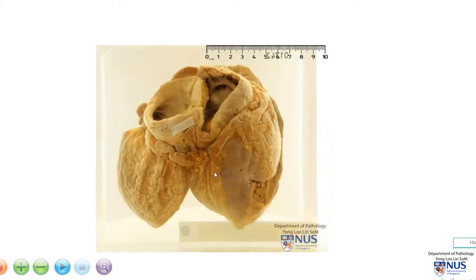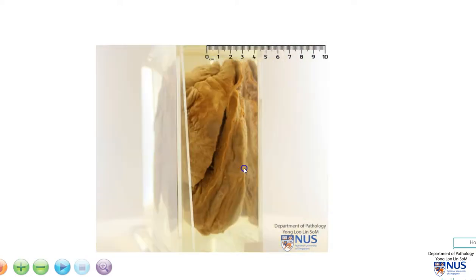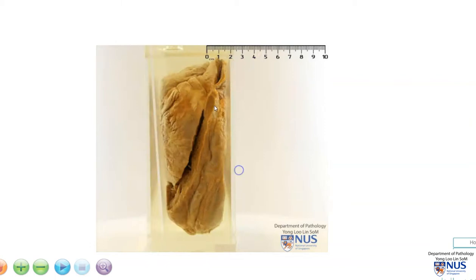On the opposite surface we can see the left atrium and the right atrium. And this is the right ventricle.